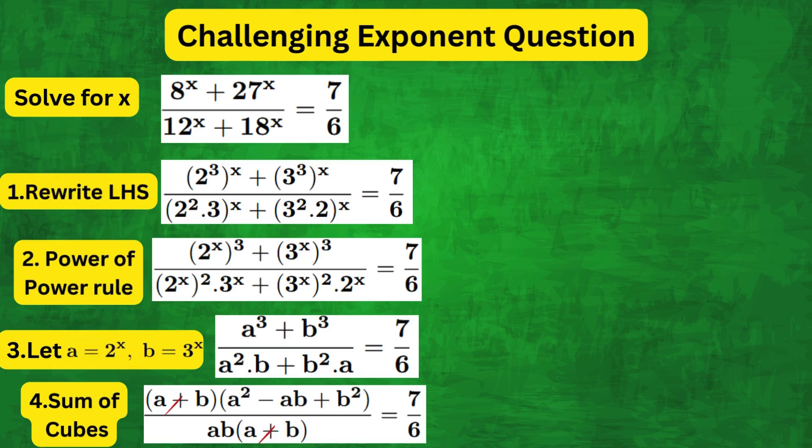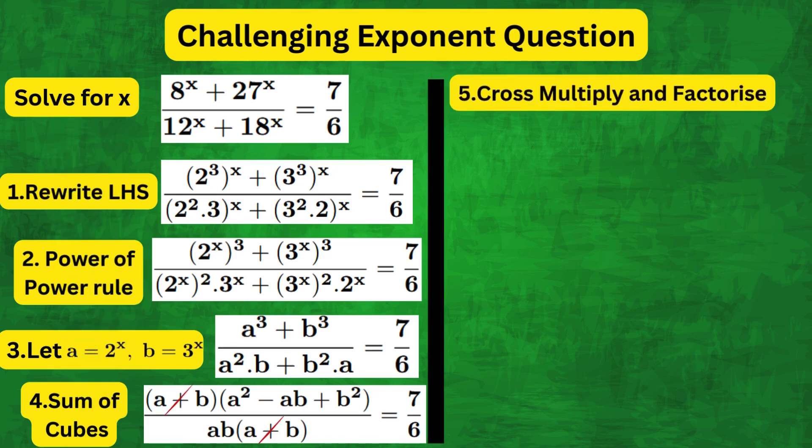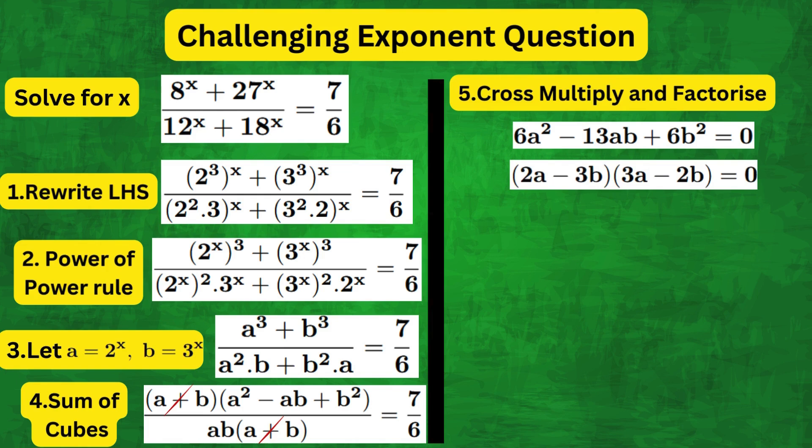So the a plus b terms cancel and we can cross multiply to give us the equation 6a squared minus 13ab plus 6b squared equals 0. And then we can simply factorise to get 2a minus 3b times 3a minus 2b equals 0.